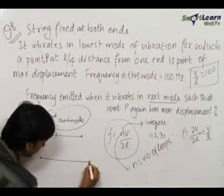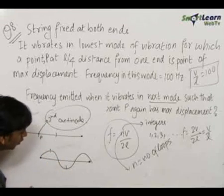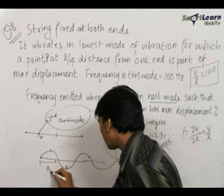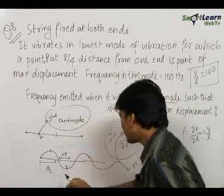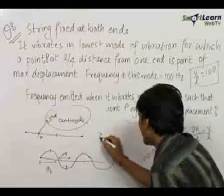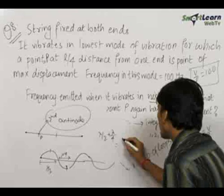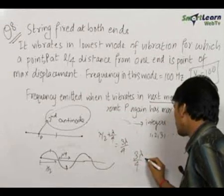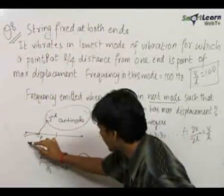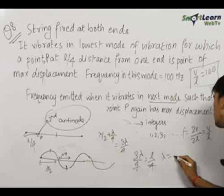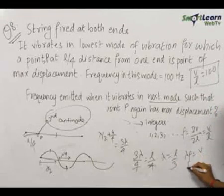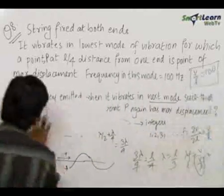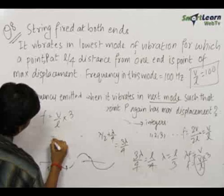For a string, the first antinode is at λ/4 from the end, and the second antinode is at λ/2 + λ/4 = 3λ/4 from the end. Therefore, for the second case, 3λ/4 = L/4, since the second antinode is at distance L/4 from the endpoint. This gives λ = L/3. Since λf = v, the frequency equals v/λ = (v/L) × 3. We know v/L = 100 Hz, so the frequency comes out to be 300 Hz.